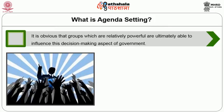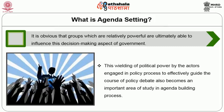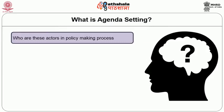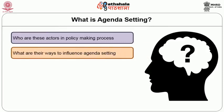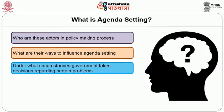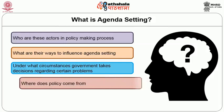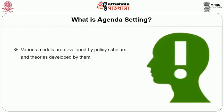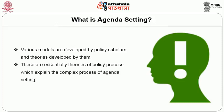It is obvious that groups which are relatively powerful are ultimately able to influence this decision making aspect of government. Thus, this wielding of political power by the actors engaged in policy process to effectively guide the course of policy debate also becomes an important area of study in the agenda building process. The questions that come to our mind are: who are these actors in policy making process? What are their ways to influence agenda setting? Under what circumstances does government take decisions regarding certain problems? Where does policy come from? How and why does policy change? To answer these questions, various models are developed by policy scholars, and those theories would be discussed now.